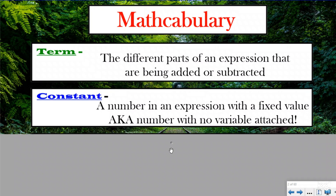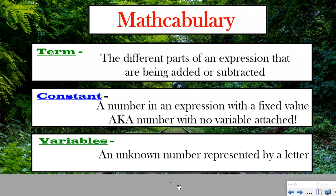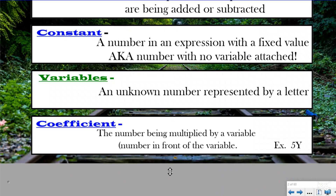Our next term is 'constant.' A constant is a number in an expression with a fixed value — in other words, it's a standalone number with no variable attached. It's typically a whole number, although it could be a decimal or a fraction as well. That leads us into the next term: 'variable.' Many of you know this from our previous playlist — a variable is an unknown number, and we represent that with a letter.